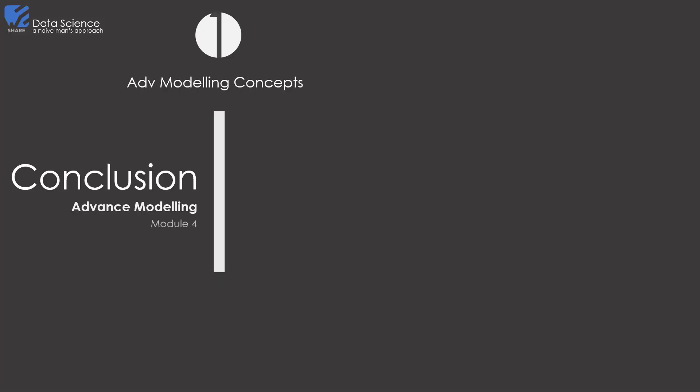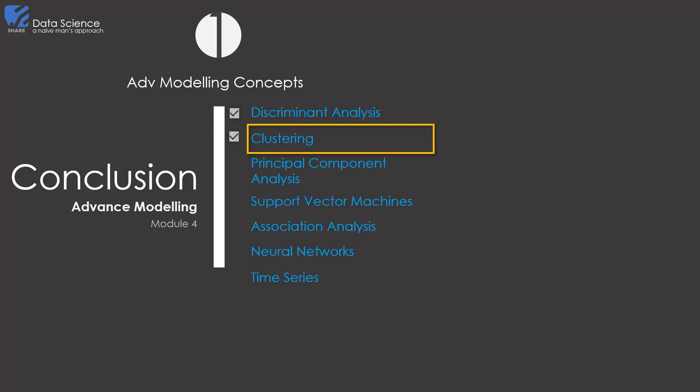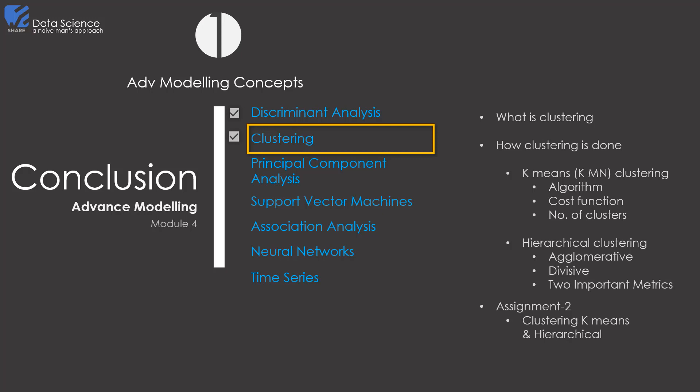So alright guys, we are through with another powerful technique, that is clustering. We have discussed what clustering is, how clustering is done. We have seen two methods for it: k-means clustering, where we discussed the algorithm, the cost function, and how to decide the number of clusters. Second method was hierarchical clustering. There we saw two techniques, agglomerative and divisive clustering. We also learnt about the distance measure and linkage criterion.